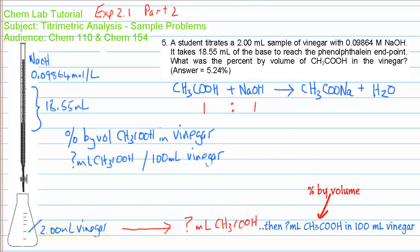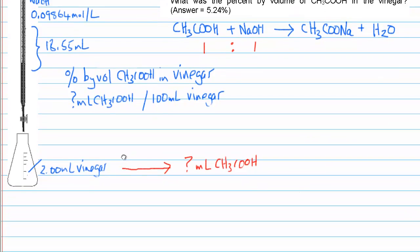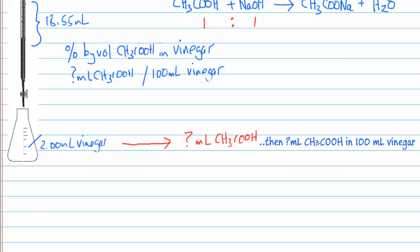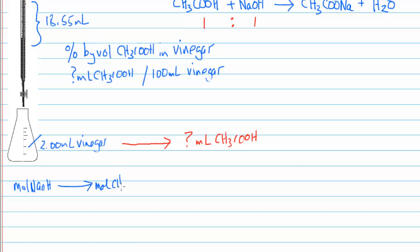That is our problem, and then we convert to percent by volume. We need a strategy: starting with the moles of sodium hydroxide (since we know its concentration and volume), we convert that to moles of acetic acid, then from moles to grams of acetic acid, and then from grams to millilitres of acetic acid in our 2 mL sample of vinegar.